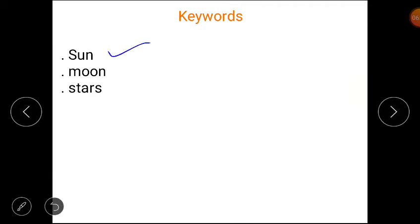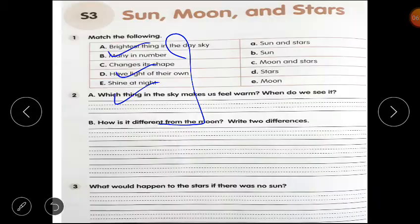Now these are your keywords: Sun, moon, and stars. You have to write these keywords in your notebook. Now please open your worksheet S3: Sun, Moon, and Stars.